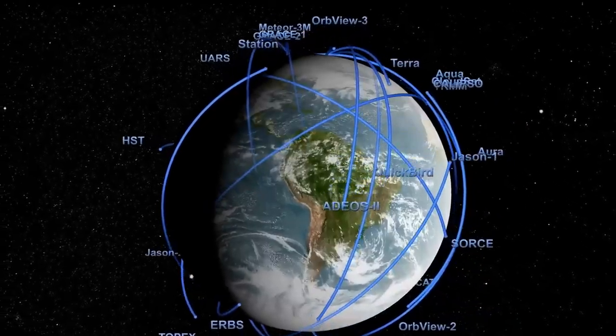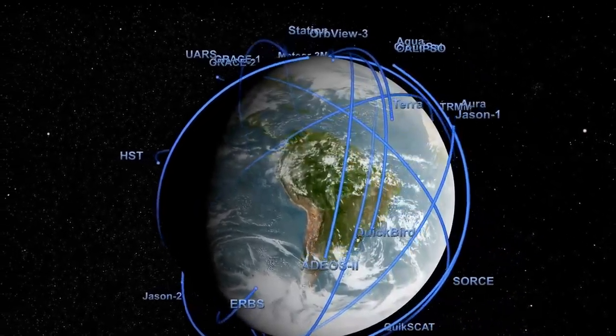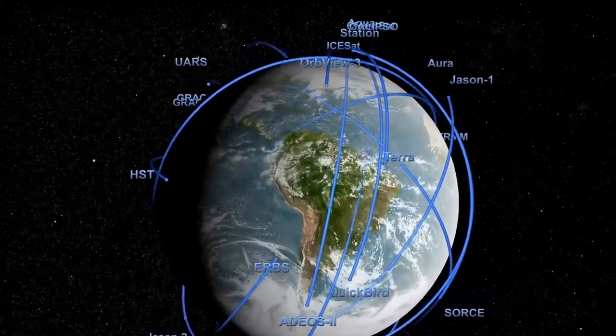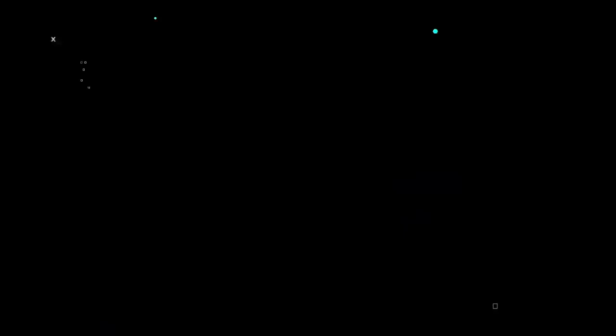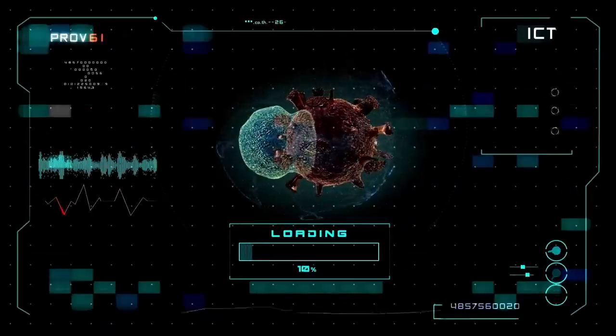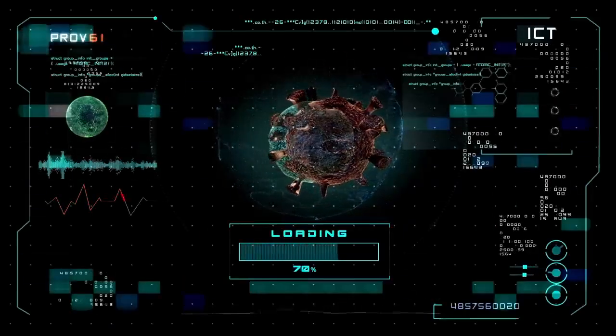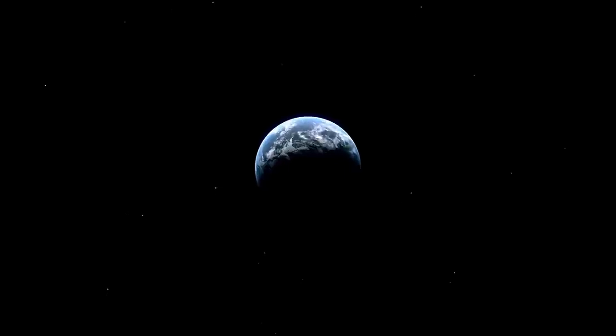Originally, the Golden Record symbolized hope, a cultural snapshot of Earth complete with sounds, greetings in multiple languages, and diagrams revealing our planet's location. But in this new light, it appears more like a galactic flare. If discovered and understood, it would lead any recipient directly to us.